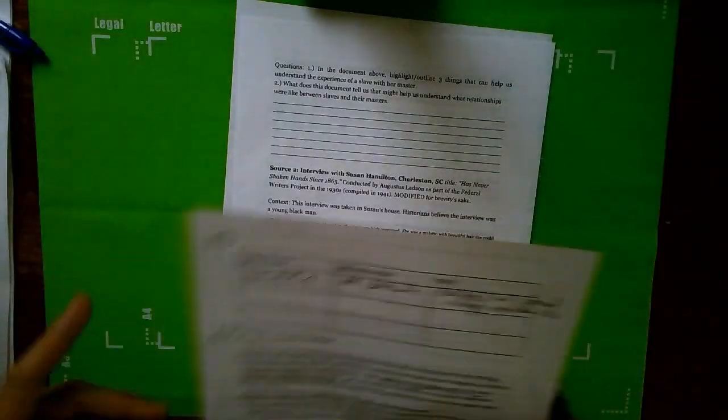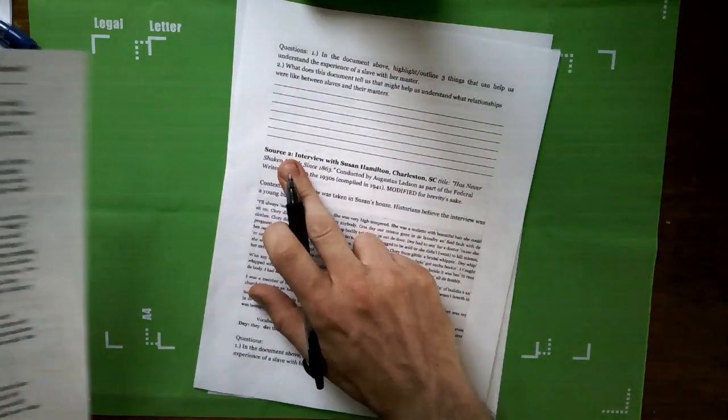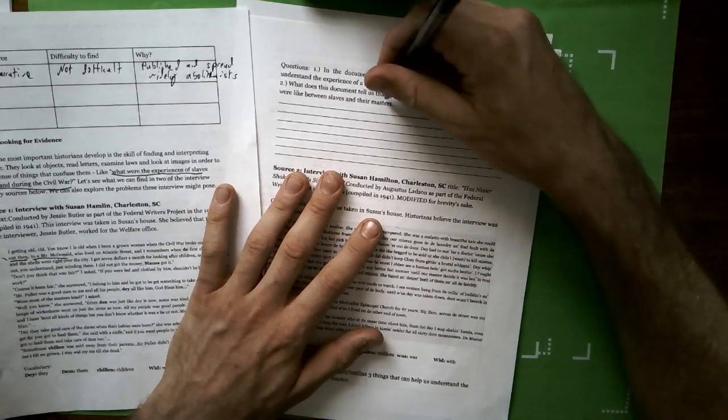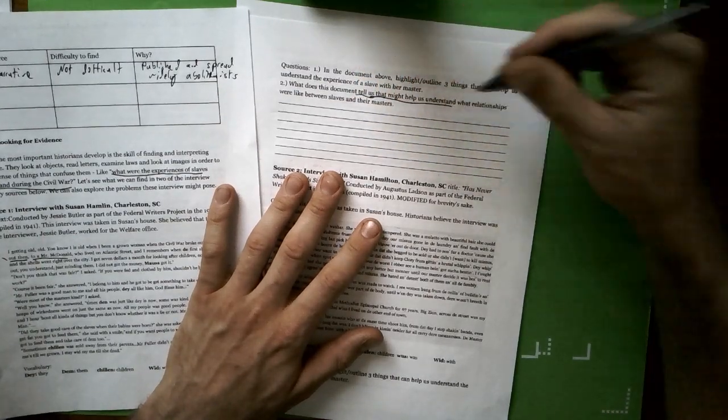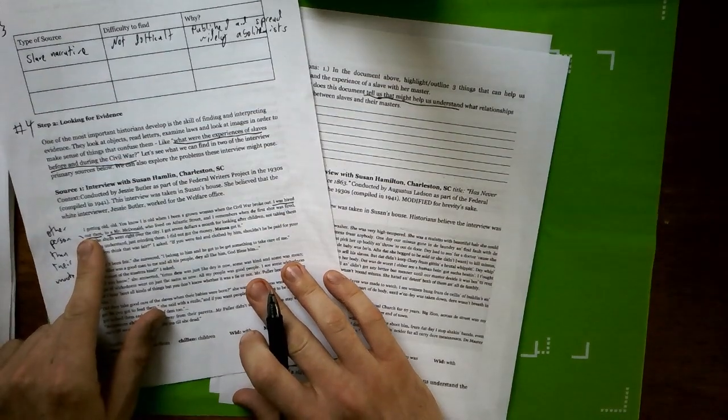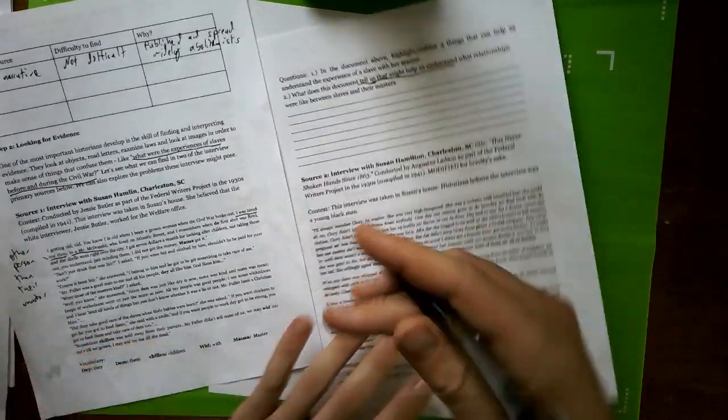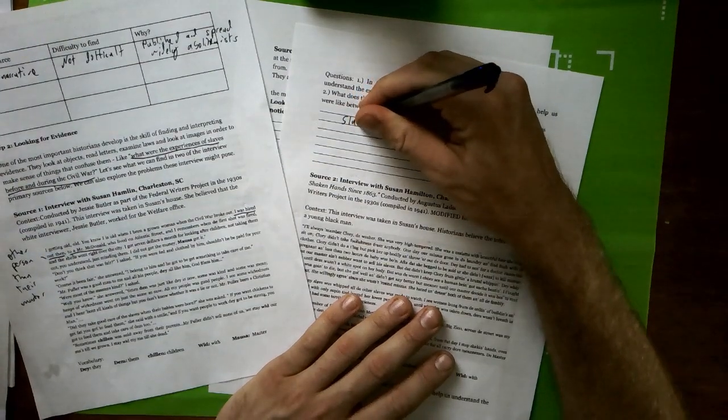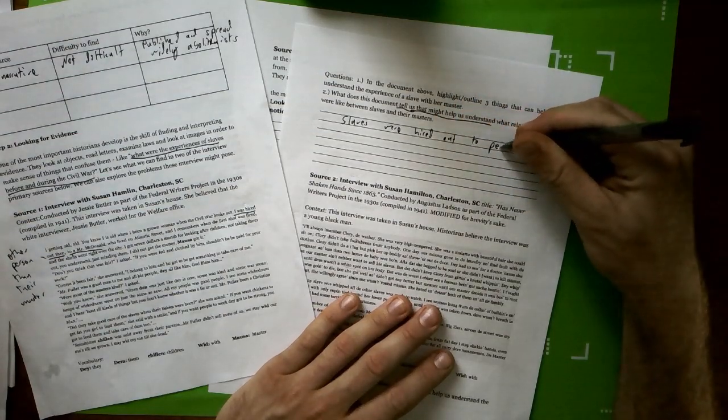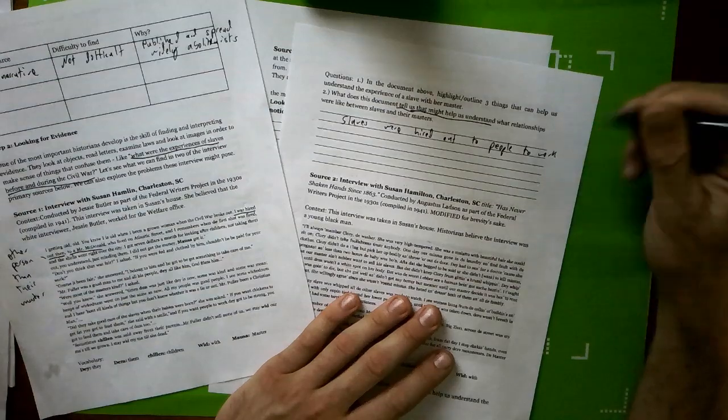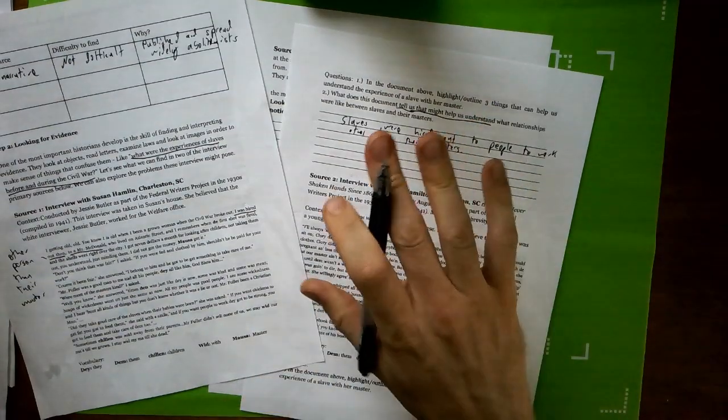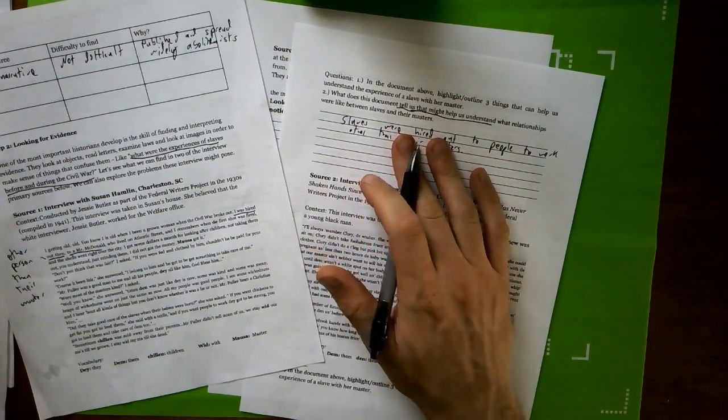So that's that as far as underlying evidence. The next thing you're going to need to do on both document source number one and source number two is, again, try to answer the question, what this document tells us that might help us understand the relationship between slaves and their masters. So because I highlighted over here in the source that slaves were hired out to people other than their masters, I'd write down over here, slaves were hired out to people to work, just to be clear, other than their masters. So you'll do this three times for each of the two sources, and then you're done with assignment number four.